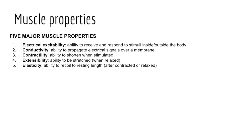Third, muscle tissue has contractility — the ability of muscle tissue to contract forcefully when stimulated by an action potential, resulting in muscle tissue pulling on its bony attachment points and shortening with force. There are two types of muscle contraction: isometric contraction, where muscle tissue develops tension but doesn't actually shorten, and isotonic contraction, when the tension generated is great enough to overcome resistance of an object so as to move it, resulting in muscle shortening and movement.